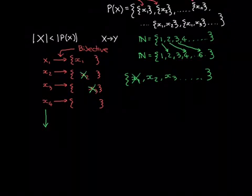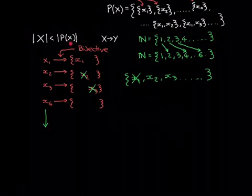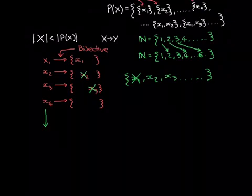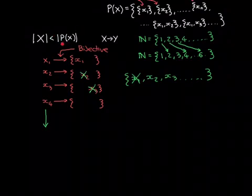And in particular, we have proven that whenever you try to construct a bijective mapping, the way that it is going to fail is in surjectivity - there is always going to be an element in the power set of X that is outside of this injective mapping. And that is then good enough proof to prove that the power set has a larger cardinality than X itself. So, thank you for watching.